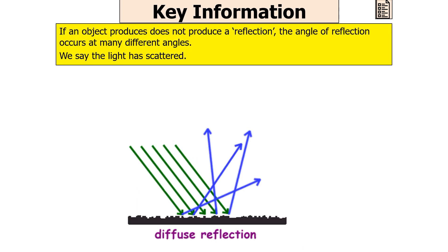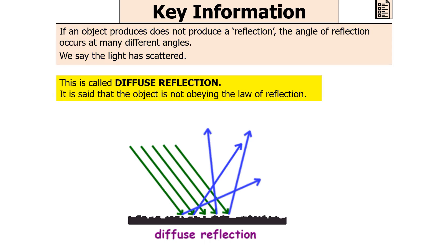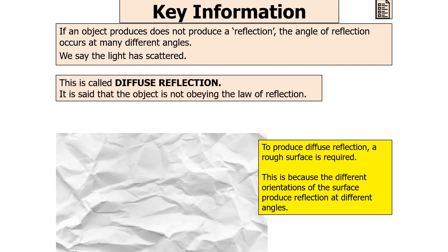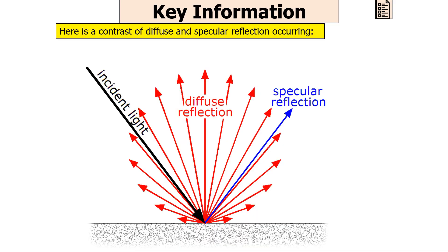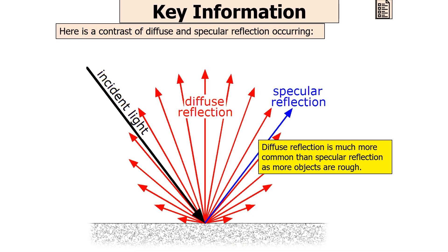If an object does not produce a clear reflection, the angle of reflection occurs at many different angles — we say that the light has scattered. This is called diffuse reflection, and the object is not obeying the law of reflection. To produce diffuse reflection a rough surface is required, because the different orientations of the surface produce reflections at different angles. In diffuse reflection the reflected rays are scattered in all directions. Diffuse reflection is much more common than specular reflection as more objects are rough than smooth.